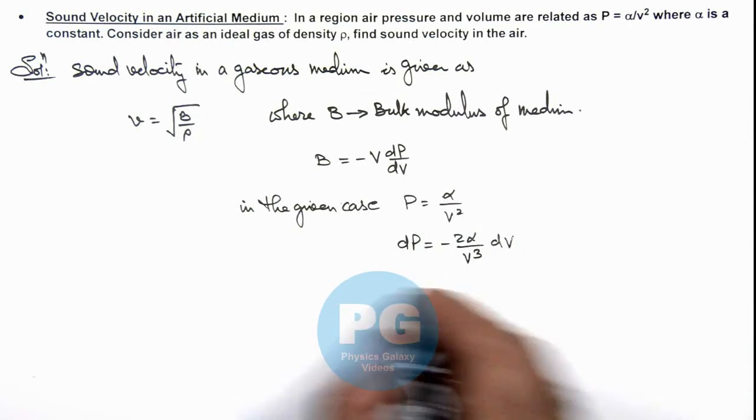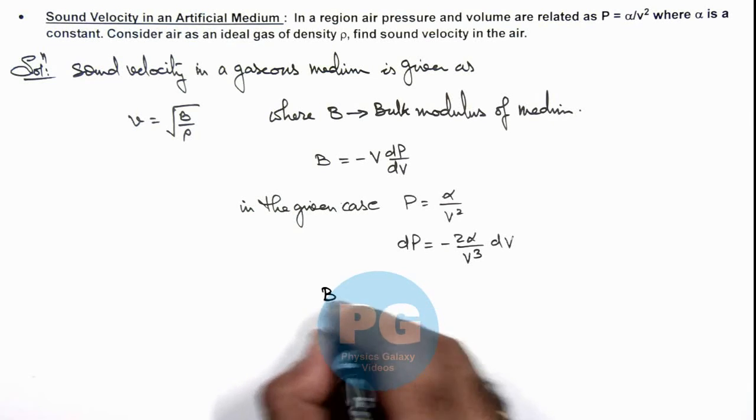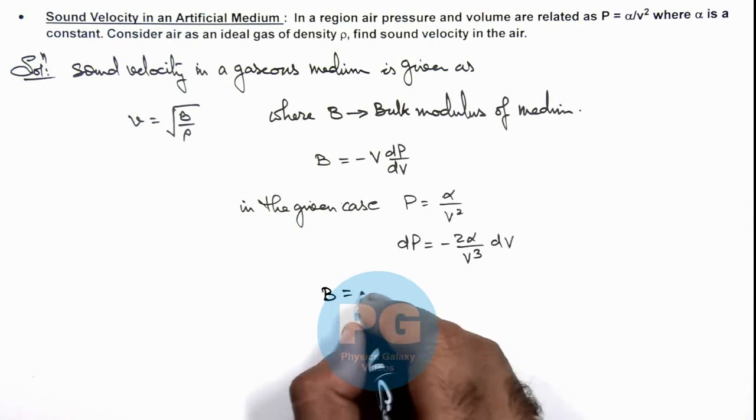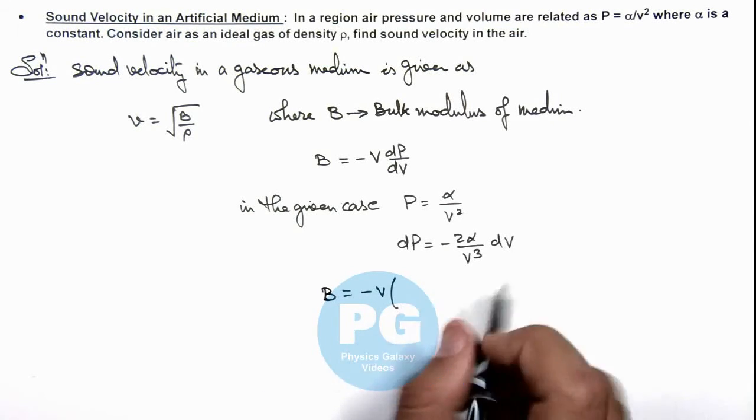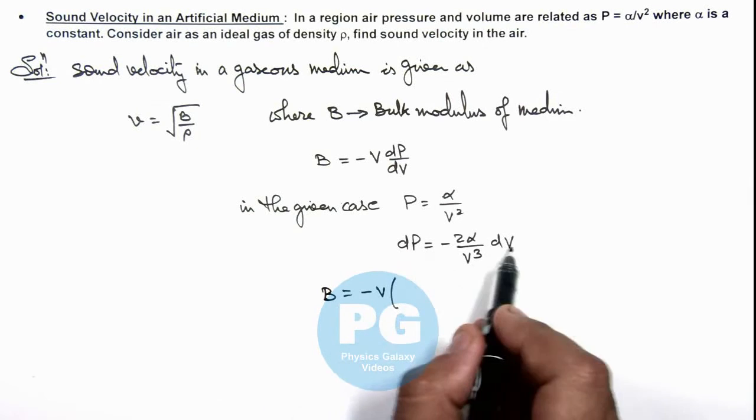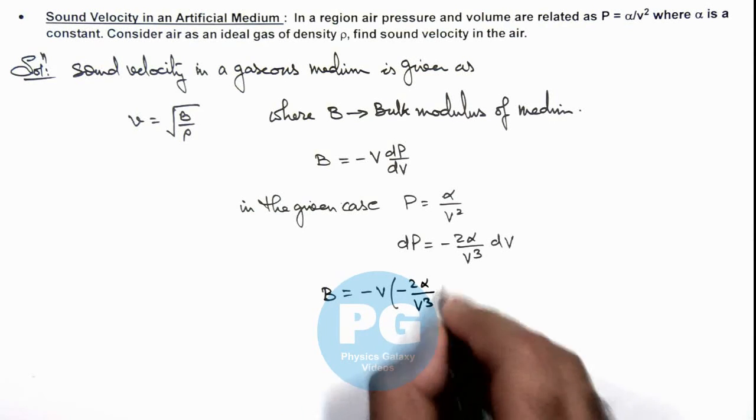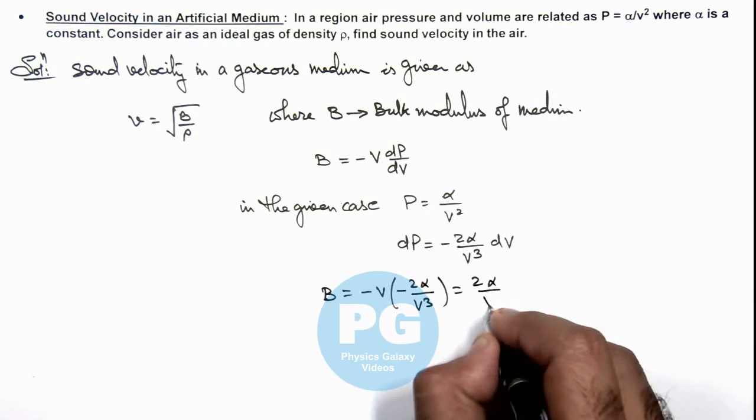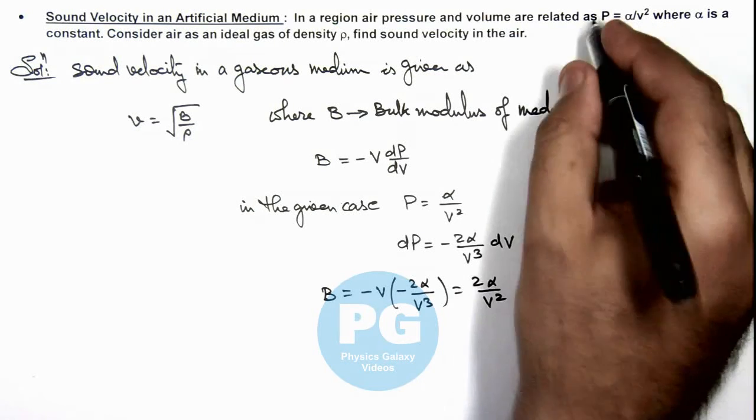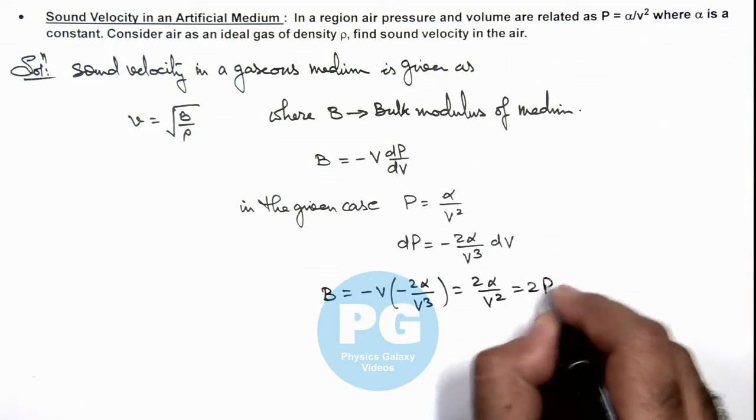So in this situation, bulk modulus can be given as minus V multiplied by - if we calculate dP by dV, this is minus 2 alpha by V cubed, which is equal to 2 alpha by V squared. And alpha by V squared is P, so this can be written as 2P.